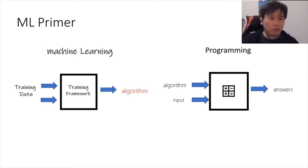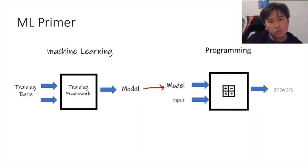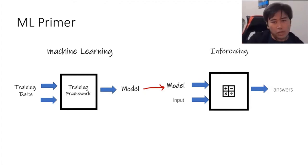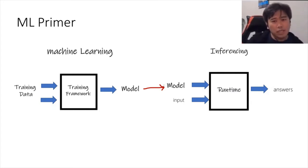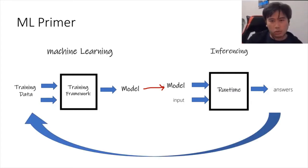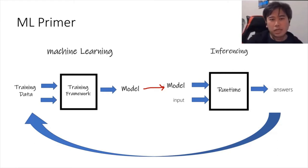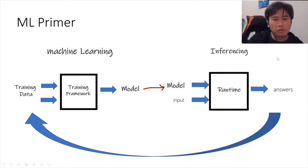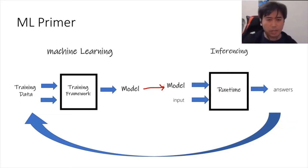In traditional programming on one side, you have your input, algorithm, and it spits out answers. In the machine learning world, you have answers and input, and the output is an algorithm. We call that input and answers 'training data.' You need a training framework or machine learning trainer framework to build a model, and that model you then use in your application. We call that 'inferencing,' and you need a runtime in order to use that model and get answers. ML.NET is also a training framework.